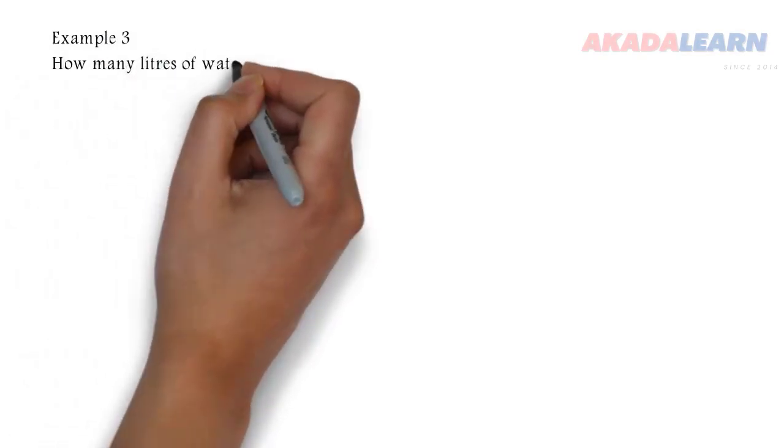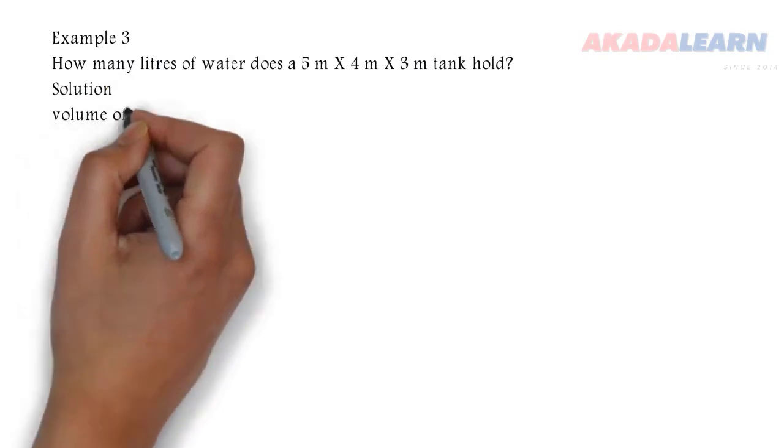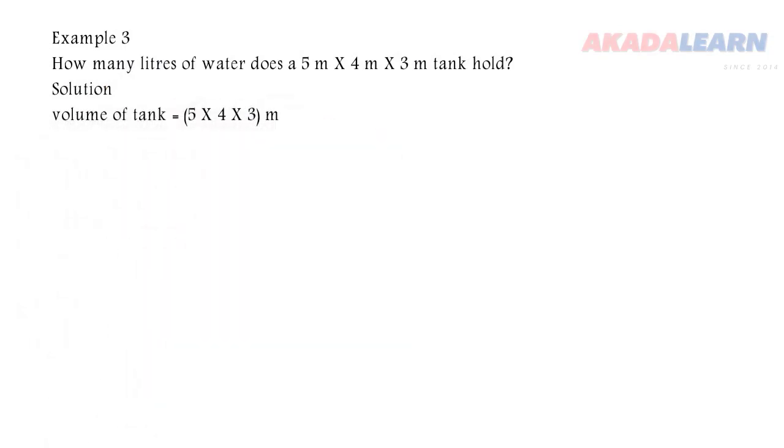Example 3: How many liters of water does a 5 m by 4 m by 3 m tank hold? So volume of tank, we know, is length times breadth times height, which is 60 m³.